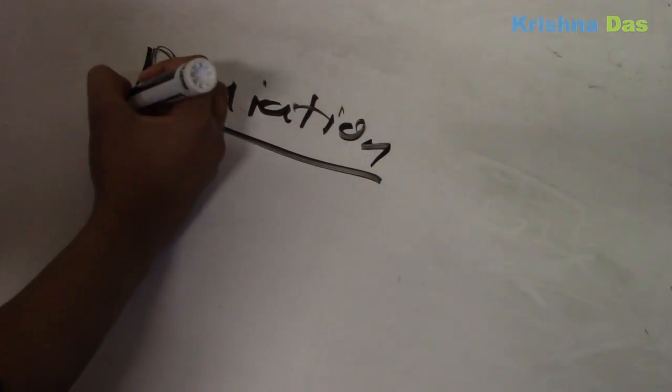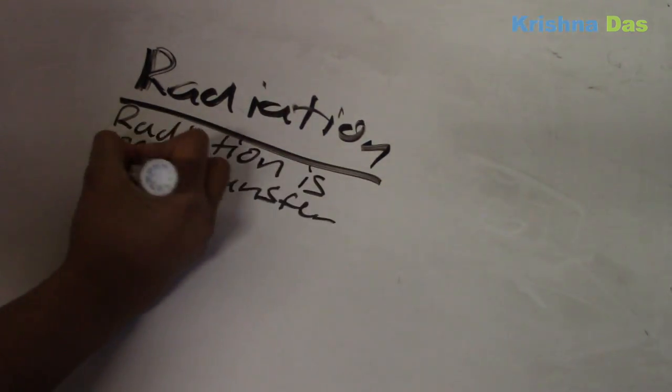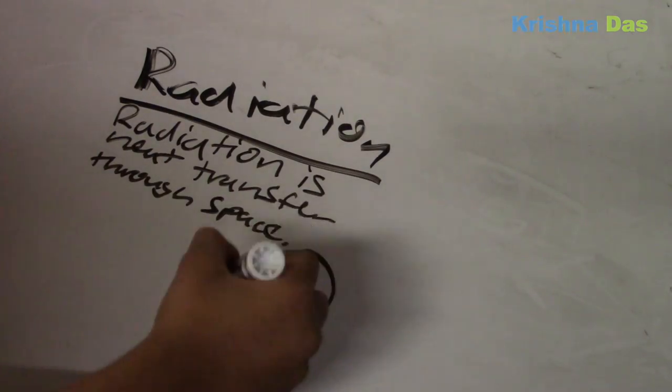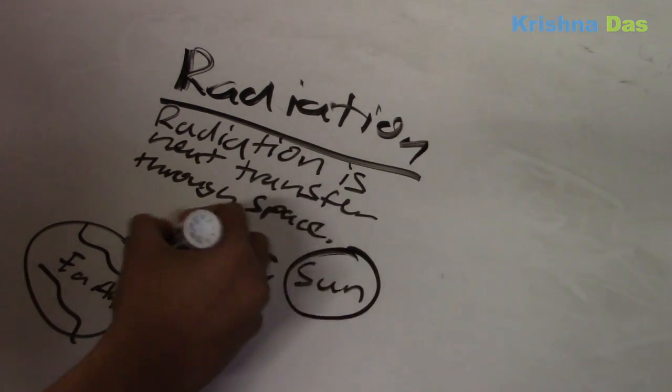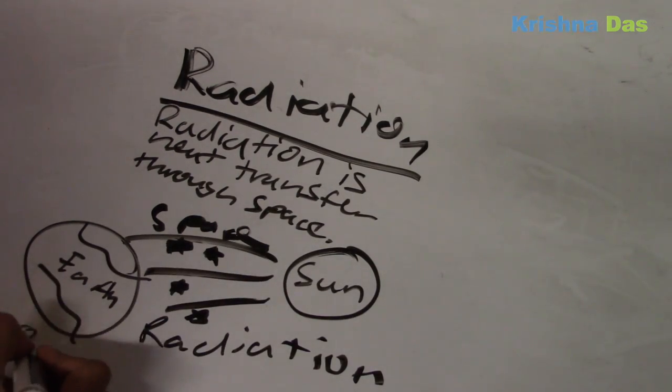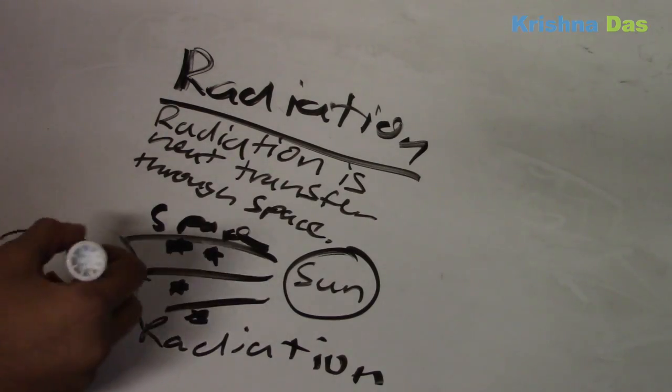The first one is radiation. Radiation is the heat transfer that happens from the Sun to the Earth. The heat transfer that comes from the Sun approaches the Earth through radiation. So let's zoom into this Earth.